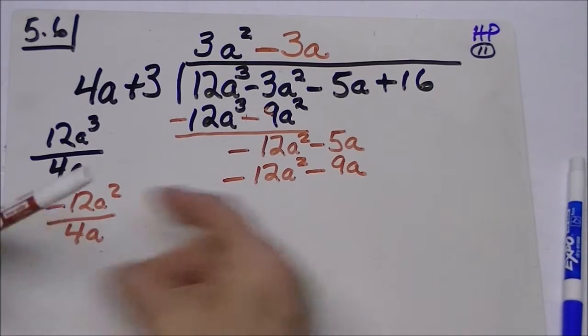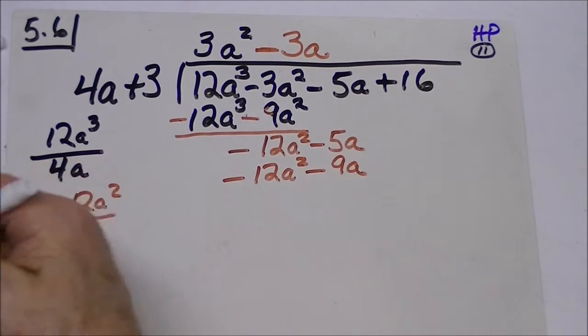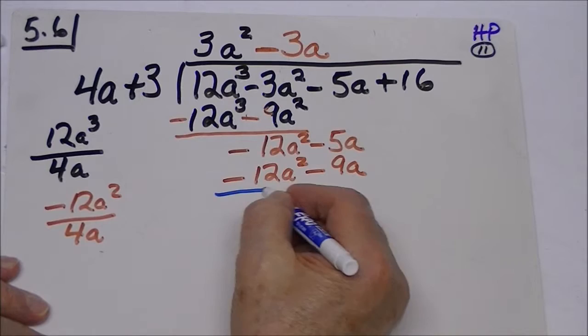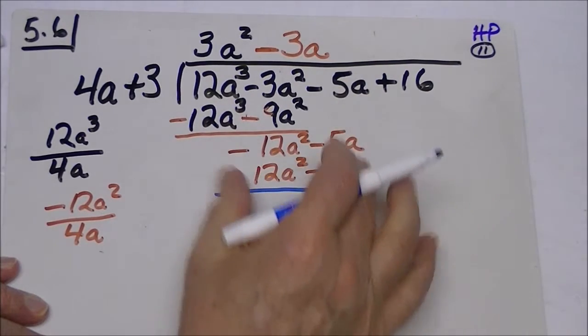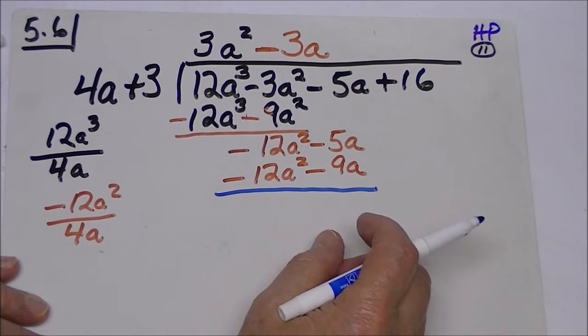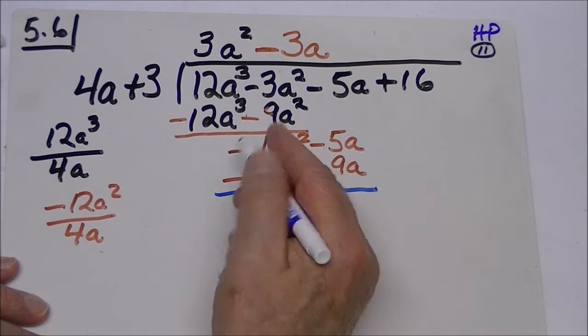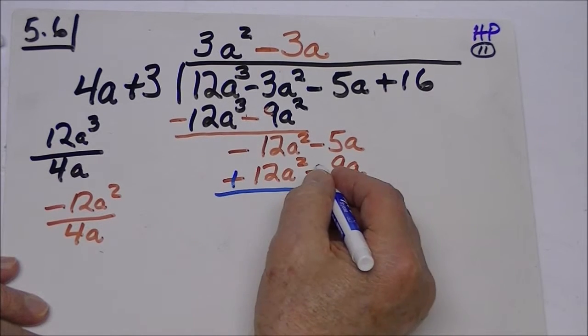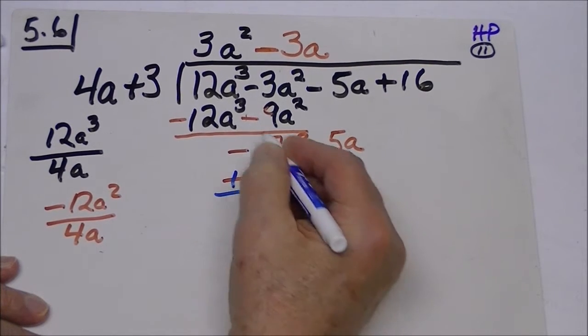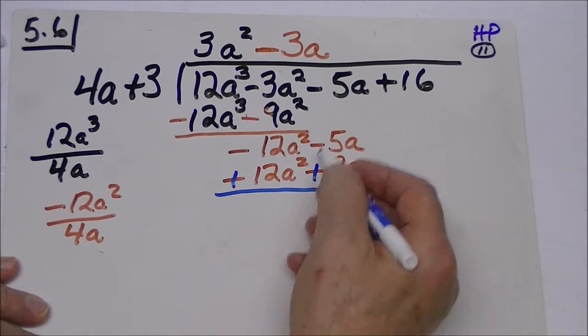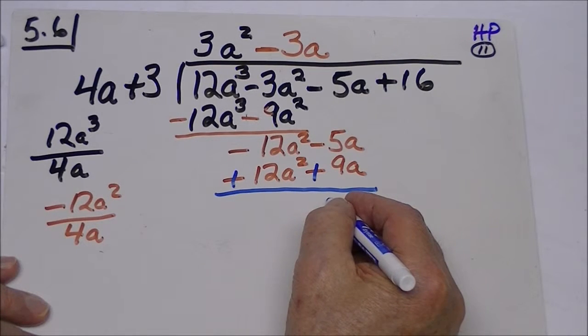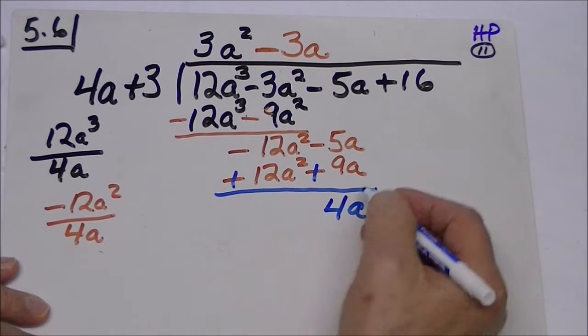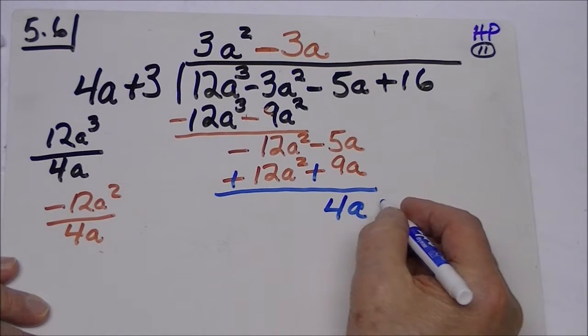Now what do we do? Well, we're going to put a line and we have to subtract this, and how do we indicate subtraction? By changing the signs. Now these will cancel out and this leaves me with a positive 4a here, and we bring down the 16.